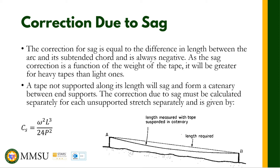Nagkakaroon tayo ng sag kapag iniingat natin yung tape, tapos merong siyang part na unsupported. The correction for sag is equal to the difference in length between the arc and its subtended chord, and is always negative. Looking at the figure, between points A and B, the straight line from A to B is the required length. Because this length is unsupported, nagkakaroon ng sag — bimababasit. The shape of the sag is a catenary.